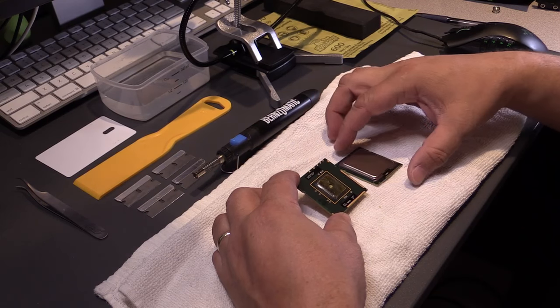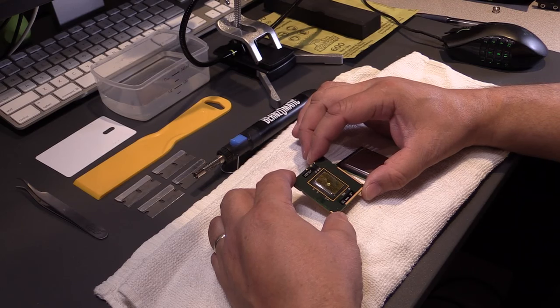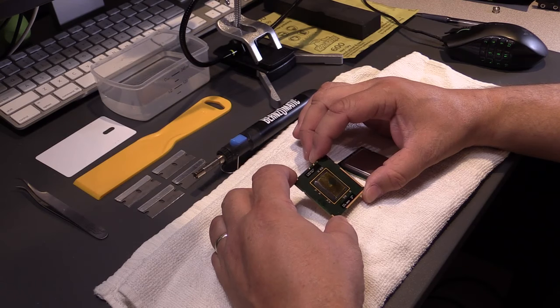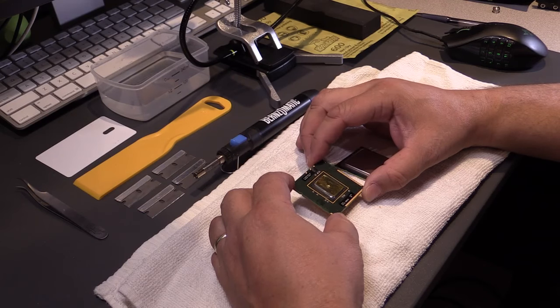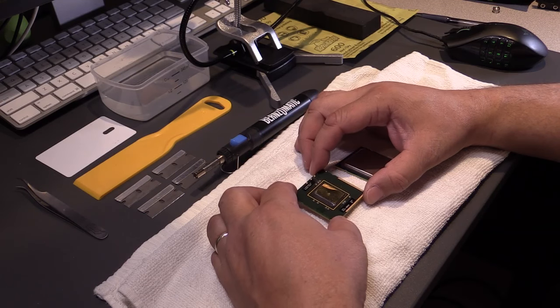You can see this is actually one of the original CPUs from a 2009 model Mac Pro that has been removed. With this demonstration today, specifically, we're going to show you how to remove this integrated heat spreader from the CPU without damaging it.